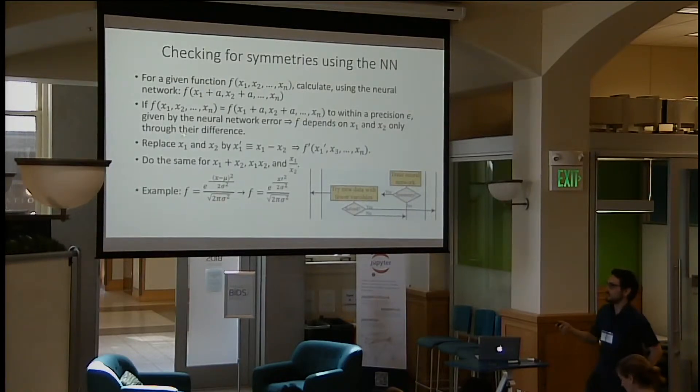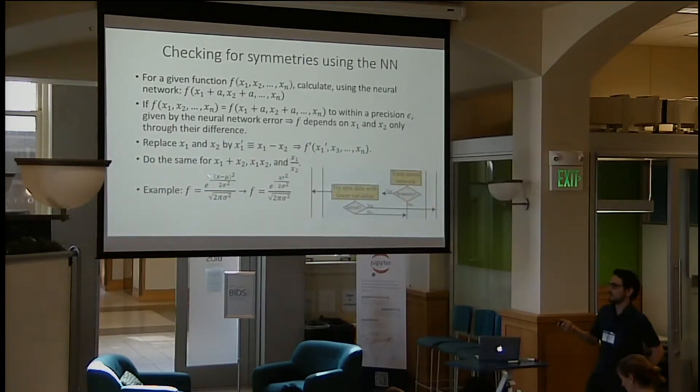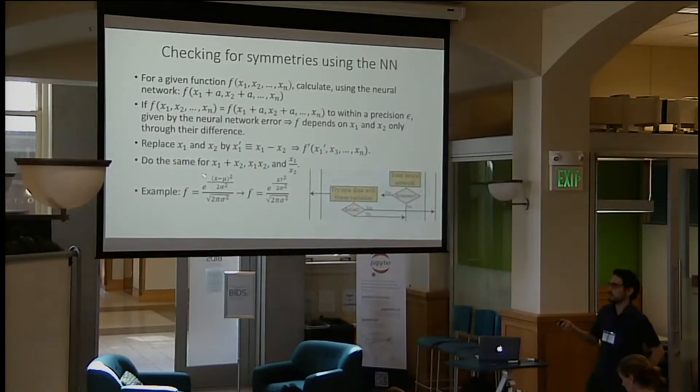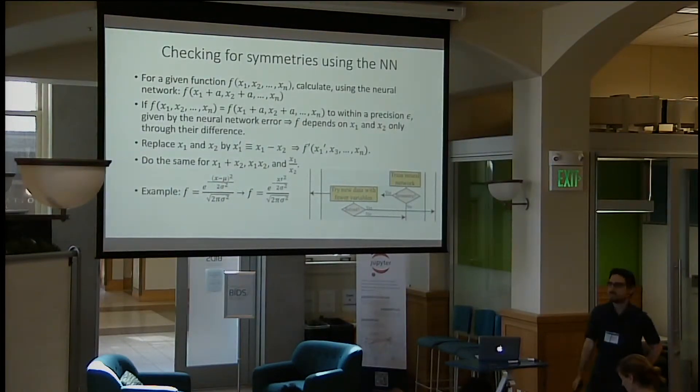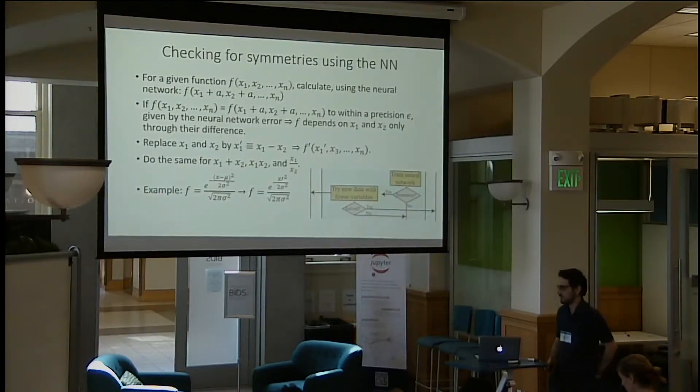For example, in one case x and mu appear only through their difference, so we can replace them with a new variable, which significantly reduces the complexity of the equation.